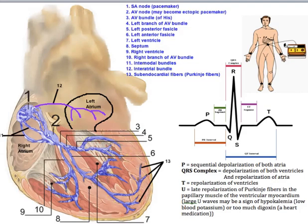The T wave represents the repolarization of the ventricles. Sometimes a U wave may be seen as a downward deflection at the end of the T wave, representing late repolarization of Purkinje fibers in the papillary muscle of the ventricular myocardium. This can be viewed as normal in most cases; however, large U waves may be a sign of hypokalemia or too much digoxin.